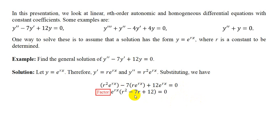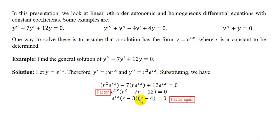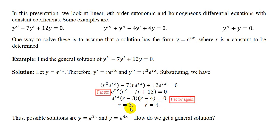We need to factor this trinomial by taking out the common factor e^(rx), leaving the trinomial r² - 7r + 12 in brackets. Factoring this trinomial gives two factors: (r - 3)(r - 4). From these factors, we see that r = 3 or r = 4. Substituting these values, the possible solutions are y = e^(3x) and y = e^(4x).